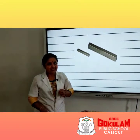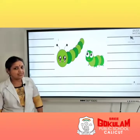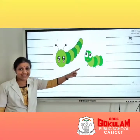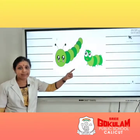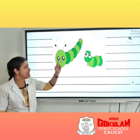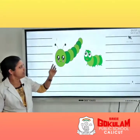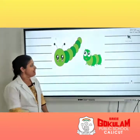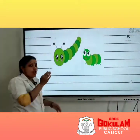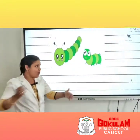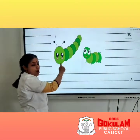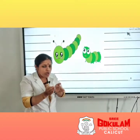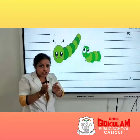Clear? Children, do you know what are these? These are caterpillars. Which caterpillar is long? This one is long. And this one is short.